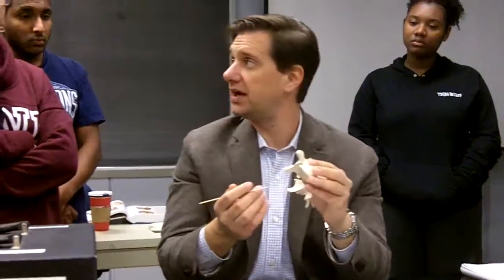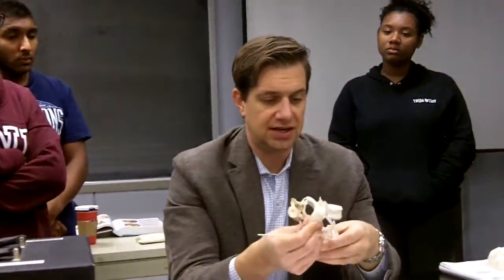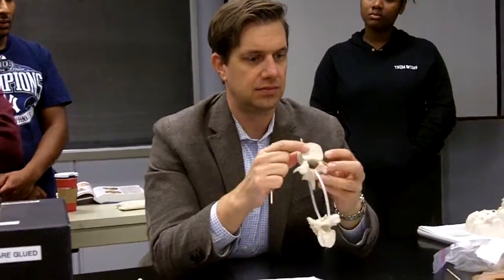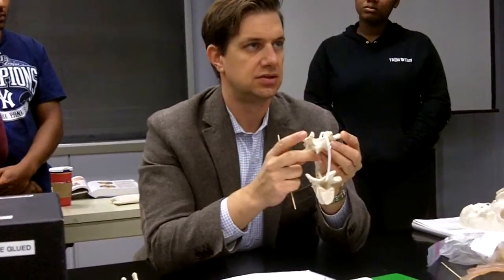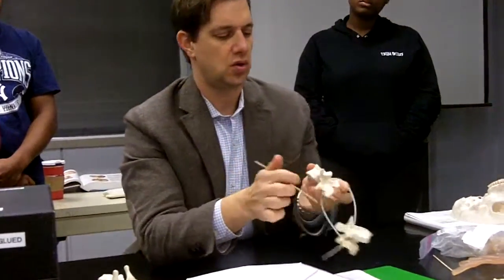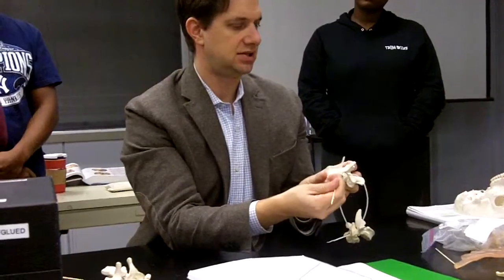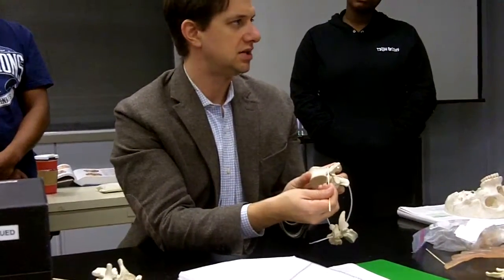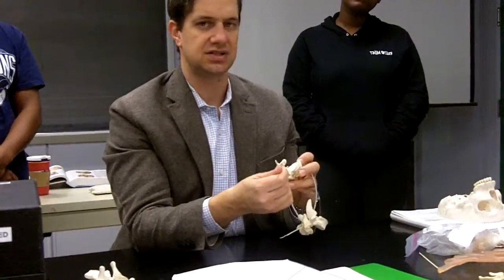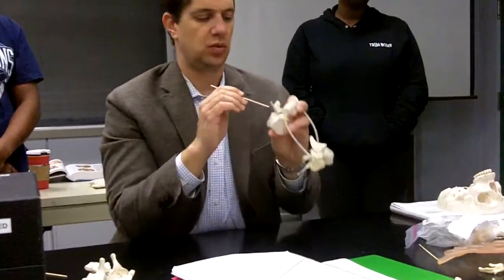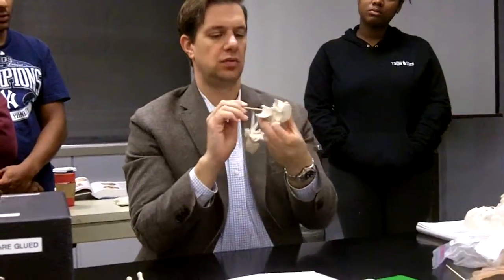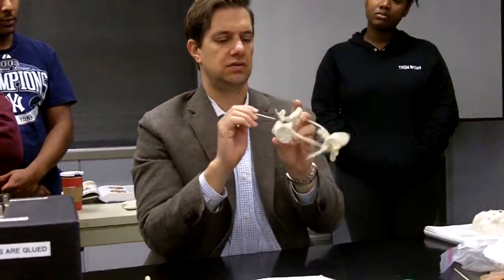That is the thoracic vertebra. What's nice is the lumbar is really not much different. What is this? Body. What is this? Transverse process. What's this process? What's this right here connecting the body to the transverse process? Pedicle. And connecting the transverse process to spinous process is the lamina. And what's the hole in the center? Vertebral foramen.